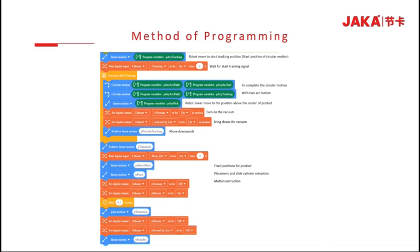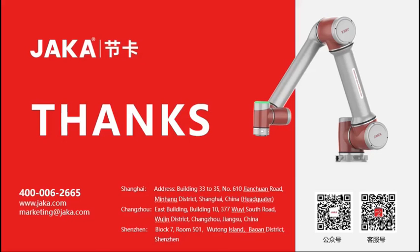Move with two semicircular paths, then the robot will move linearly to the position above the center of the product. Open the vacuum and bring it down to pick up the product. Finally, the robot will move to the fixed position to unload the product and retract the cylinder for the next cycle. That is all for the conveyor belt tracking. Thank you for watching.